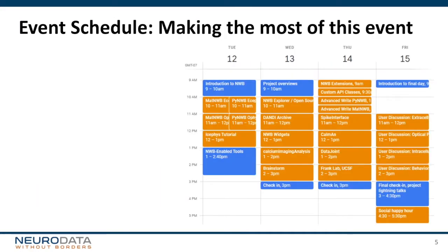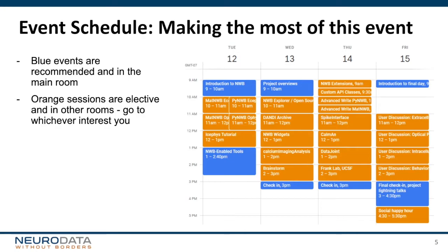I want to go over the schedule so you understand how best to use your time during these four days. The blue events are highly recommended and will be held in the main room — these will give you information and updates useful to everyone. The orange sessions are elective; go to whichever ones would be useful to you. In some cases multiple sessions run simultaneously, so you can't attend all of them, but you can go back and watch the YouTube videos after the fact.